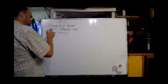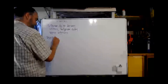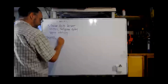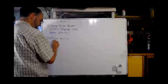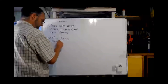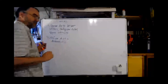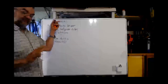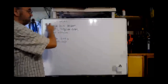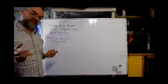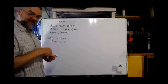And the Wolfian ducts degenerate and disappear. So the default pattern, if you have ovaries, is that the Mullerian ducts become these internal female structures and the Wolfian ducts go away.